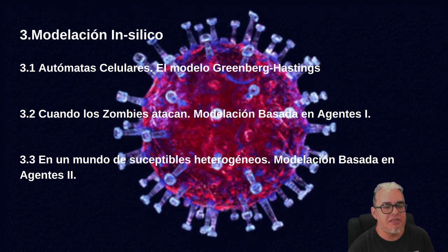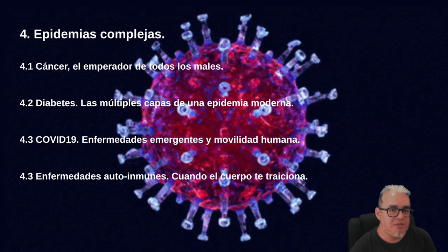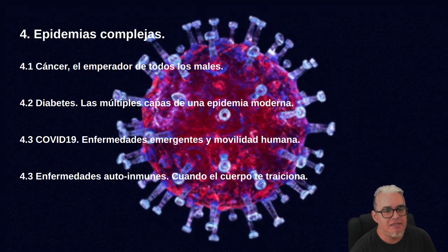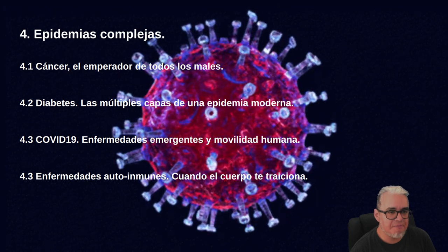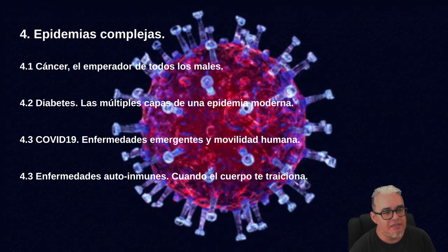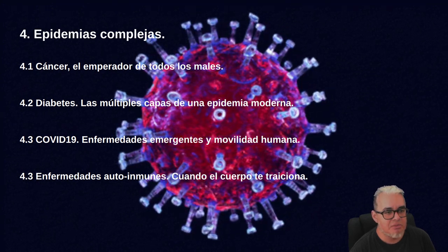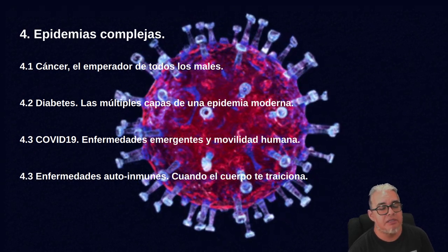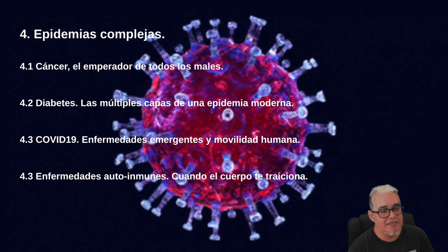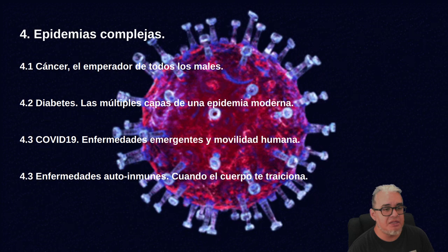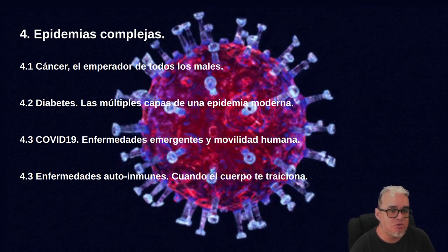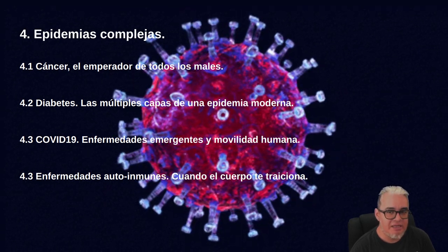Daremos algunos tipos de modelos concentrándonos en qué nos pueden decir, pero también en las limitaciones que tienen estas metodologías. Finalmente vamos a hablar de algunas enfermedades complejas como el cáncer y las posibilidades de modelación que tiene, lo mismo para la diabetes y enfermedades autoinmunes, y cerraremos con una discusión del COVID-19 y las peripecias que pasamos durante los periodos más duros de la pandemia, y cómo debemos obtener algún cambio, al menos de costumbres, en cuanto a la investigación científica de las epidemias.